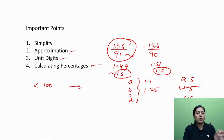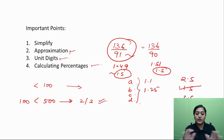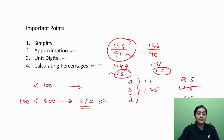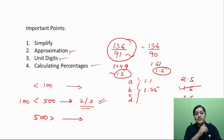If you have data less than 100, approximate one or two numbers maximum. If the data is more than 100 but less than 500, you can approximate up to 2 or 3 numbers. If the data is above 500, you can approximate up to 5 numbers. That is the rule of approximation. Always check the options, and approximating this way will save your time.